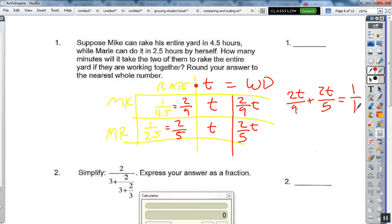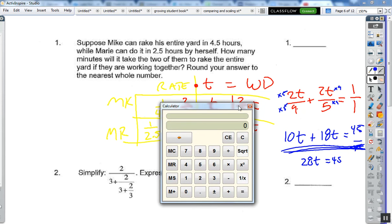So I'm going to multiply the numerator and denominator of this one by 5, and I get 10t. Over here, times 9 times 9, and I get 18t equals 45 over 45. But I'm not going to worry about the denominators because those don't change. So ultimately I have 28 times t equals 45, and now I have a really simple problem to solve. So I take 45, divide it by 28, and I get 1.61.